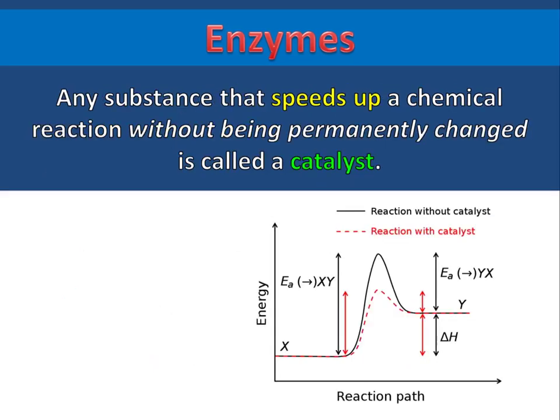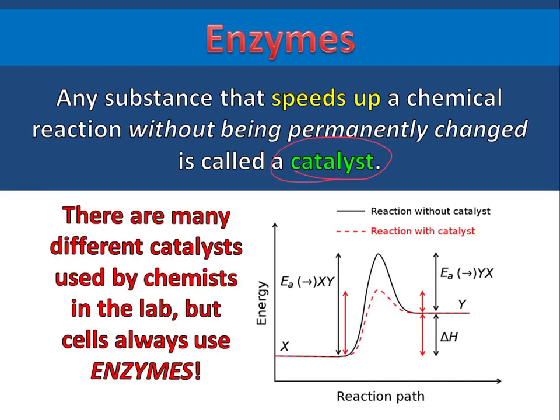Any substance that speeds up a chemical reaction without being permanently changed is called a catalyst. There are many different catalysts used by chemists in the lab, but cells always use enzymes. This is why we call enzymes the biological catalysts.